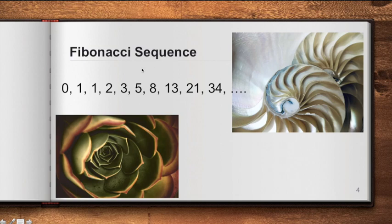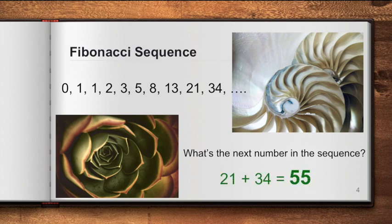There is a rule that satisfies the sequence — the next number is 55, which is 21 plus 34. The rule is that you add the two previous terms. For example, 34 is from the sum of 13 and 21. Also, 2 is from 1 plus 1, and 5 is from 2 plus 3. That is the rule of the Fibonacci sequence.